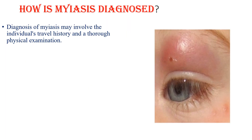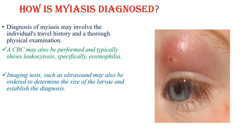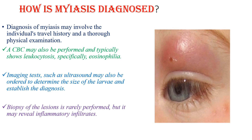Diagnosis of myasis may involve the individual's travel history and a thorough physical examination. CBC may also be performed and typically shows leukocytosis and eosinophilia. Imaging tests such as ultrasound may also be ordered to determine the size of the larvae and establish the diagnosis. Biopsy of the lesion is rarely done, but it might reveal inflammatory infiltrates.